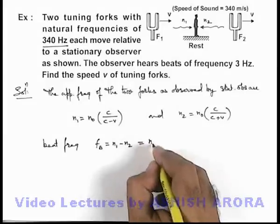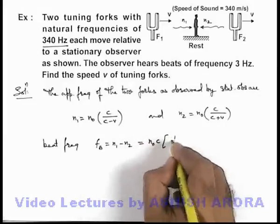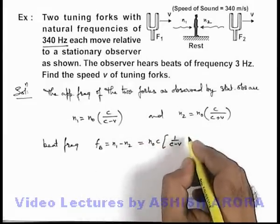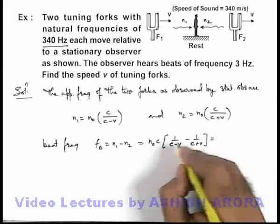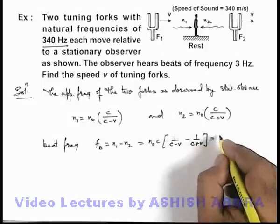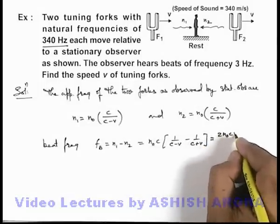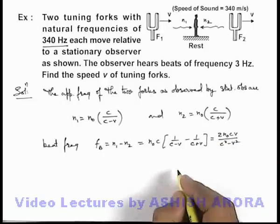If we substitute the values this will be n naught c times 1 by c minus v minus 1 by c plus v. On simplifying, we get 2 n naught c v divided by c squared minus v squared.